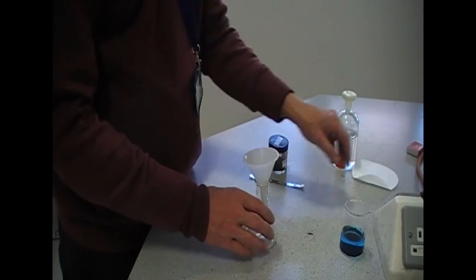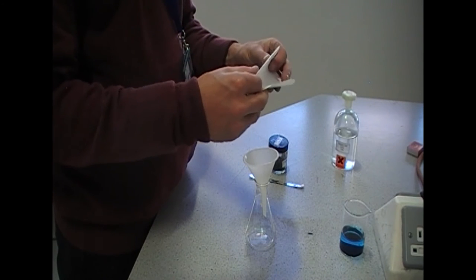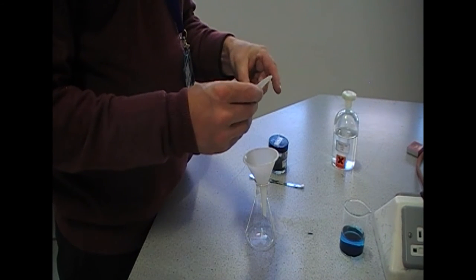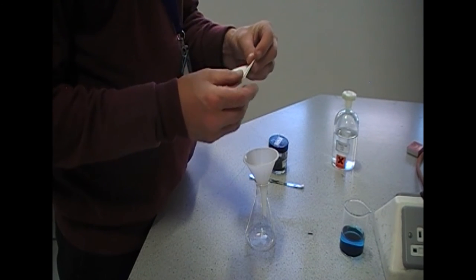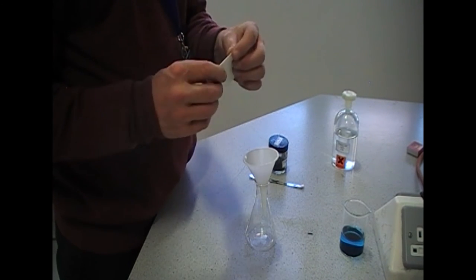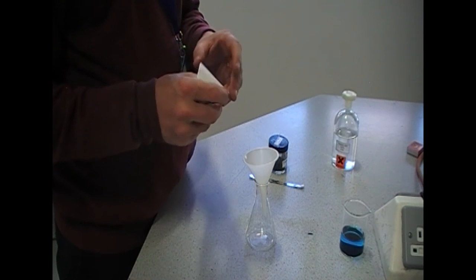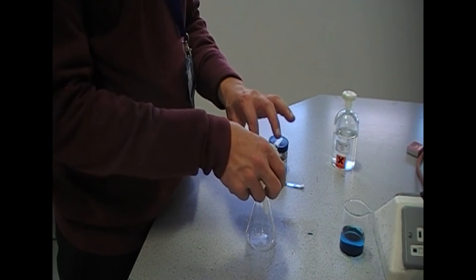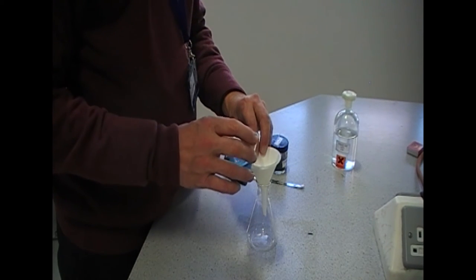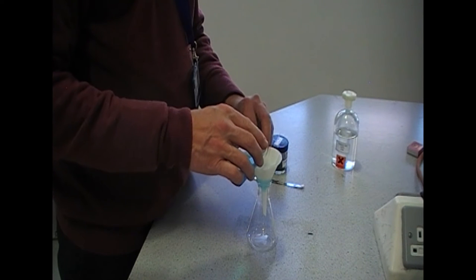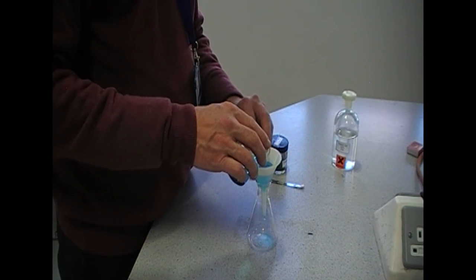Take your conical flask. Your filter paper. Fold it once. Fold it again. Put it into the funnel. And we can now pour our mixture into there.